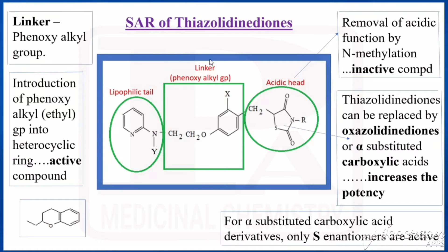Dear students, last class we have seen thiazolidinediones as anti-diabetic agents. In that we have seen two drugs: one is rosiglitazone, another one is pioglitazone. Today we are going to see the SAR of the same.